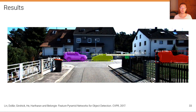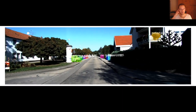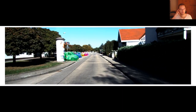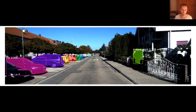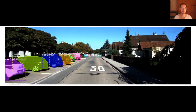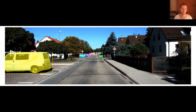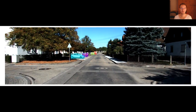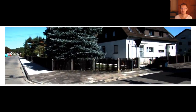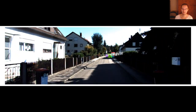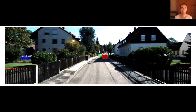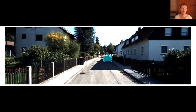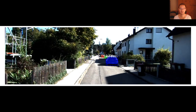What do the results of such an object detector look like? Here's an example applied to one of the KITTI sequences. It's flickering a little because there's no temporal continuity, but cars are most often correctly detected, though there are some objects incorrectly classified as cars.